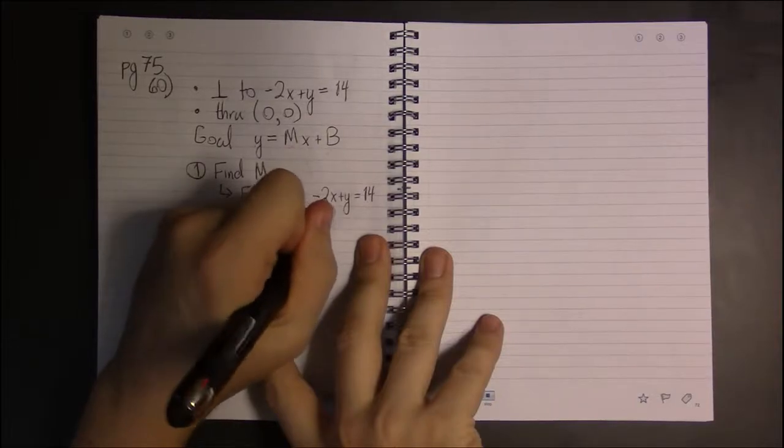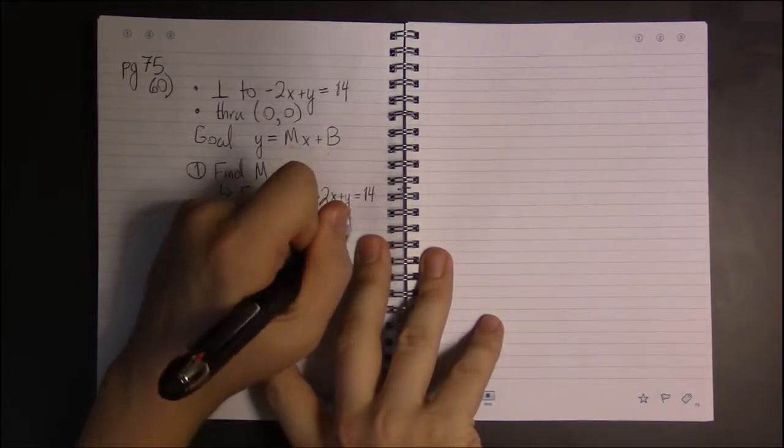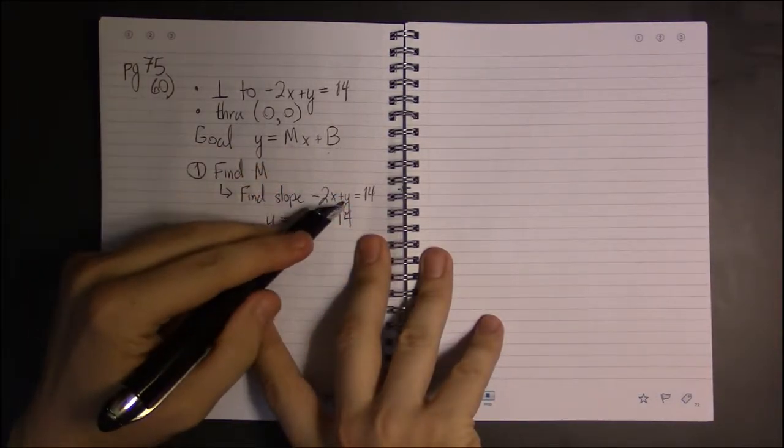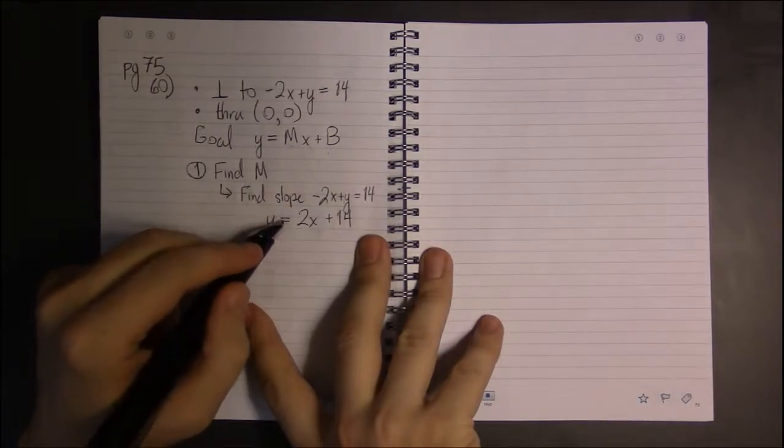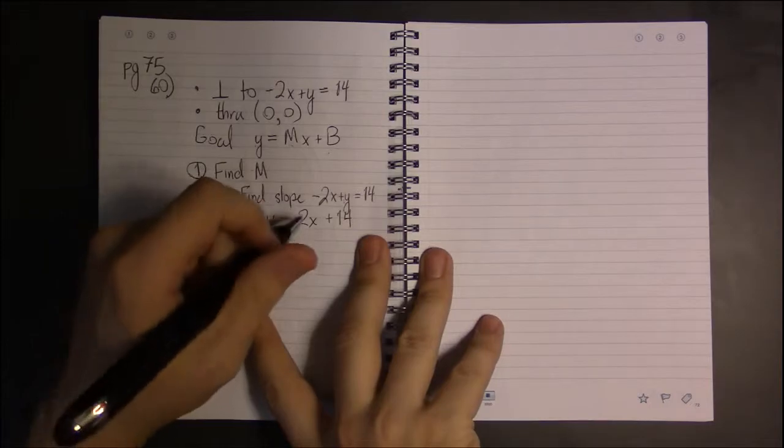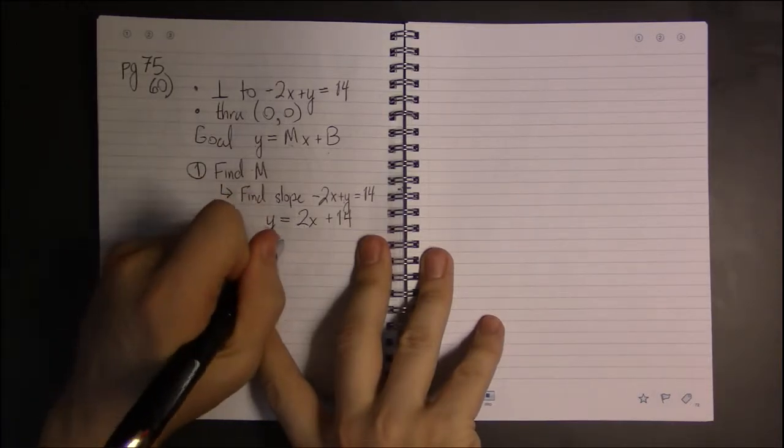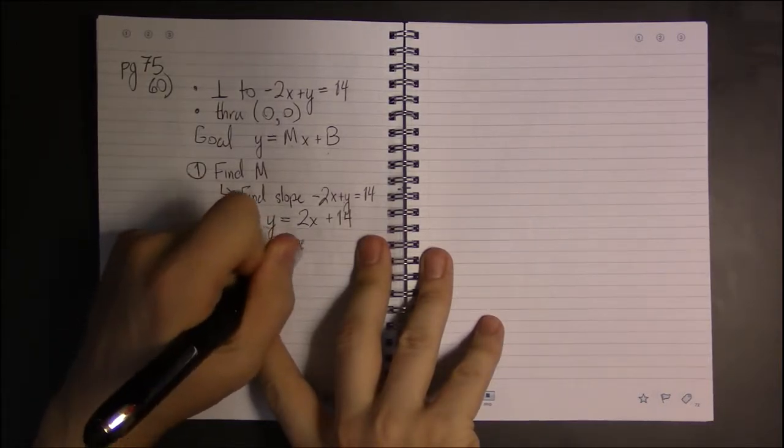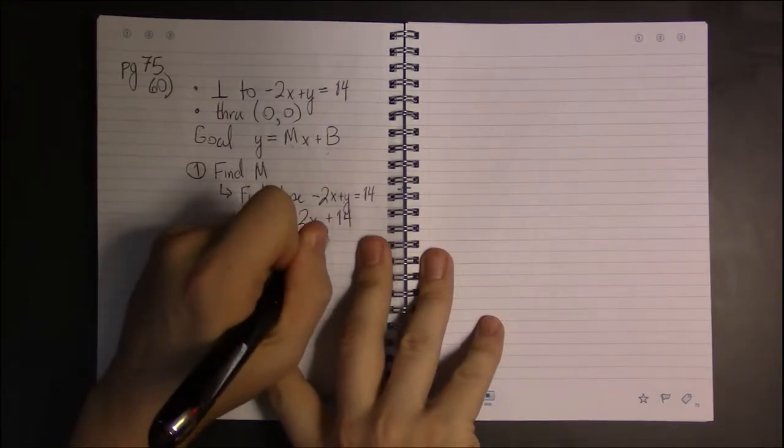If I add 2x, I get y by itself, so y = 2x + 14. And now we know the slope of this line. The slope of this line is 2.